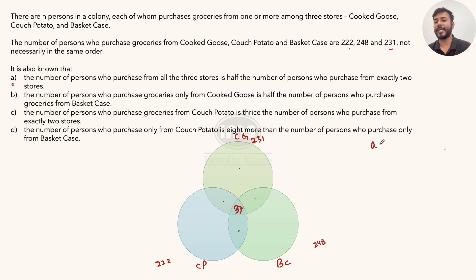Now, how to proceed? One thing I can notice here: If I add all the three circles, let's say I represent exactly one as a, exactly two as b (this value is 74), and exactly three as c (that is 37). In Venn diagrams, a plus 2b plus 3c should add up to 231 plus 222 plus 248.